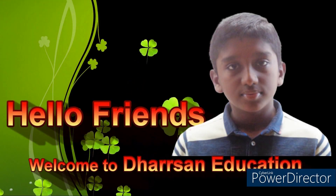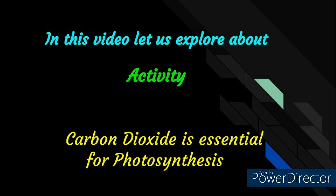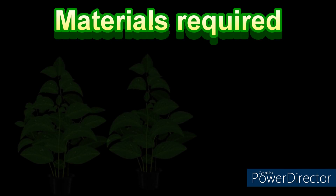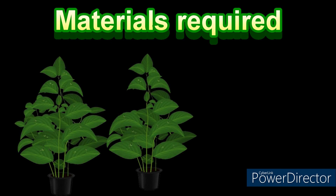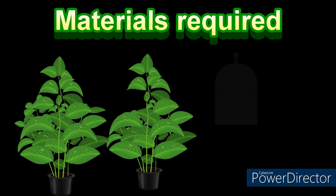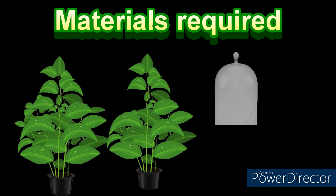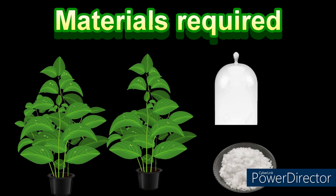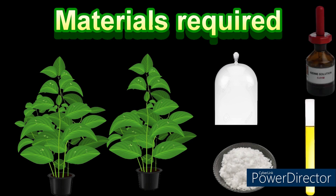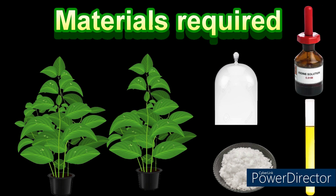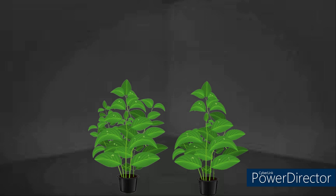Hello friends, welcome to Jashna Irrigation. In this video, let us perform an activity to demonstrate that carbon dioxide is essential for photosynthesis. The materials you require for this activity are two healthy potted plants of same size, two bell jars, potassium hydroxide, alcohol in a test tube, and iodine solution.